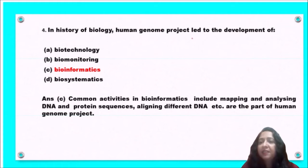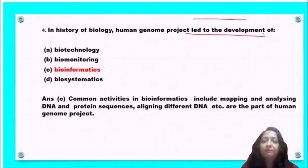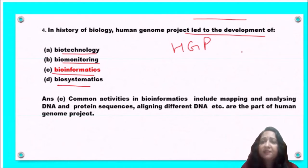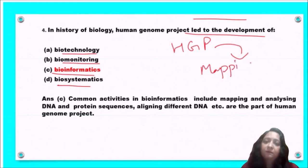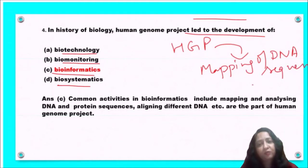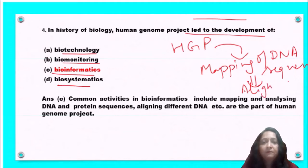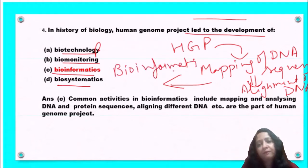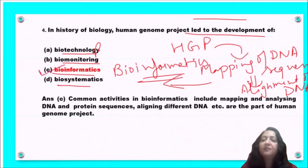Next question: the Human Genome Project led to the development of biotechnology, biomonitoring, bioinformatics, or biosystematics? The Human Genome Project is concerned with the mapping and alignment of DNA sequences, which is done with the help of computer knowledge — known as bioinformatics. So option C, bioinformatics, is the correct answer.